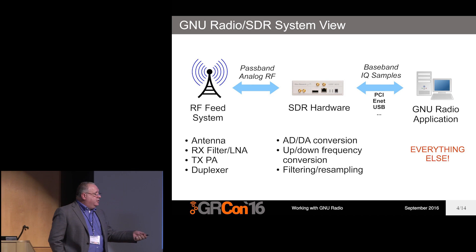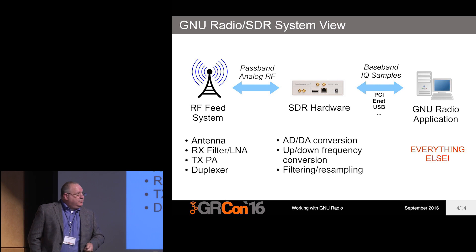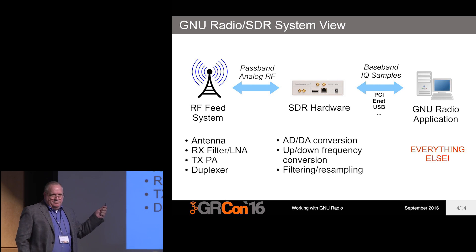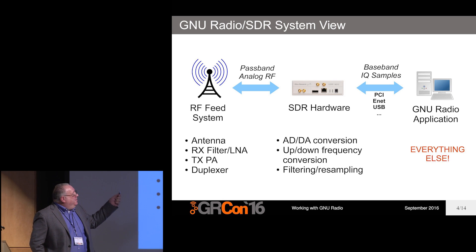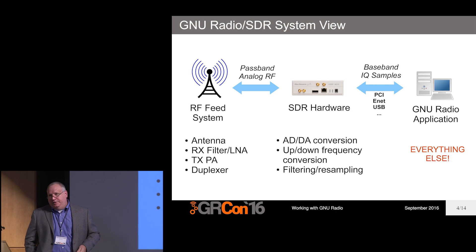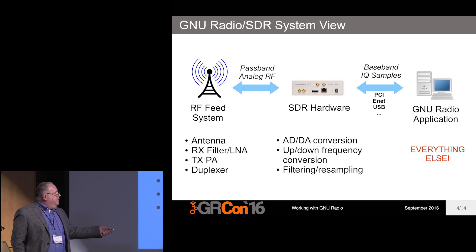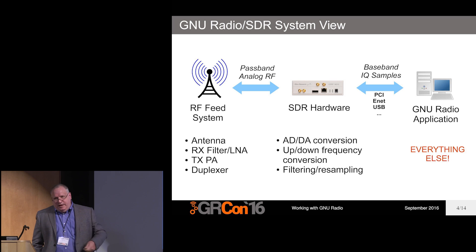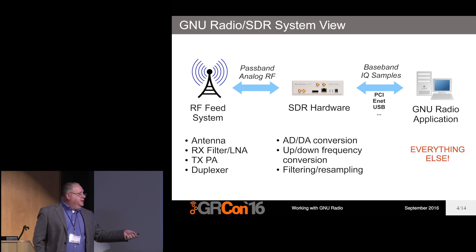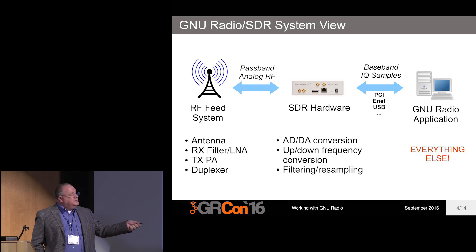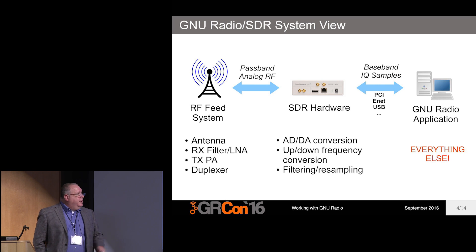In order to be successful here, you have to understand how all this fits in the bigger system. Even though it's software radio, you still need an antenna — you'd be surprised how many people ask about that. The needs of dealing with real-world RF do not go away even if you're implementing most of the algorithms in software on a PC. You have some sort of RF system — that's an antenna, an LNA, a receive filter — passband analog RF going to some form of SDR hardware that then does digitization, conversion to baseband, and some filtering and resampling. Finally, you have a signal in a format that can be processed more easily by software, and that gets transported over some kind of bus system — USB, Ethernet, or PCI. Everything else about dealing with that radio signal would be implemented in GNU Radio.